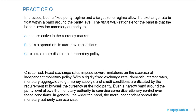Fixed exchange rates impose severe limitations on the exercise of independent monetary policy. With a rigidly fixed exchange rate, domestic interest rates, monetary aggregates such as the money supply, and credit conditions are dictated by the requirement to buy and sell the currency at the rigid parity. Even a narrow band around the parity level allows the monetary authority to exercise some discretionary control. In general, the wider the band, the more independent control the monetary authority can exercise.